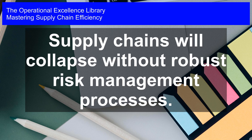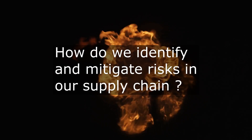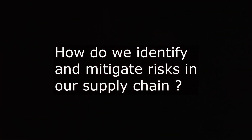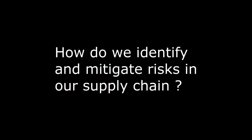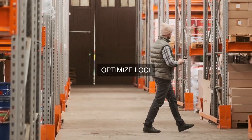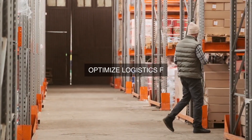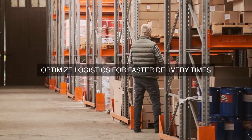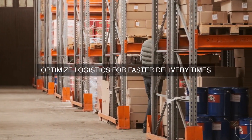Mastering supply chain efficiency. Supply chains will collapse without robust risk management processes. Why do we need to establish robust risk management processes to identify and mitigate potential disruptions, bottlenecks, and vulnerabilities in our supply chain? And what strategies can we implement to ensure operational excellence and minimize their impact on our business operations and customer satisfaction?